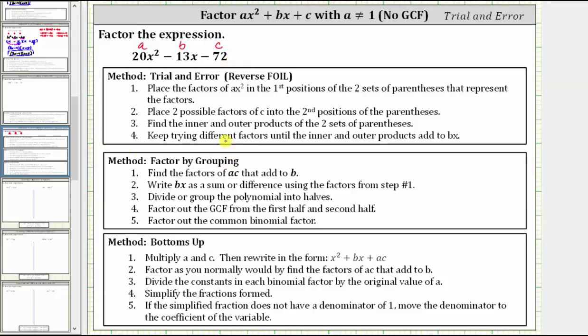The methods of factor by grouping and bottoms up require using the factors of a times c, and notice for this trinomial, a times c is equal to 20 times negative 72, which equals negative 1440.